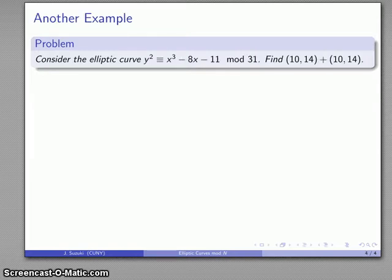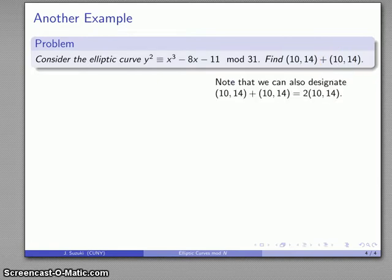Now let's take a look at another example. So again, I'll take an elliptic curve, this time mod 31. (10, 14) is a point on the curve, and this time I'll just add (10, 14) to itself. So let's see what happens. One thing that's worth noting, we can use the notation that any time we add a point to itself, what we get is 2 times the point.